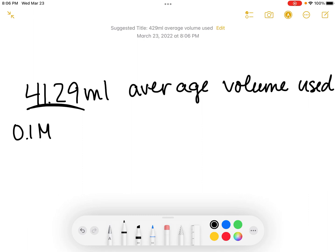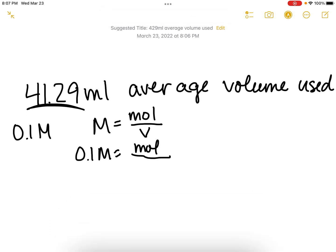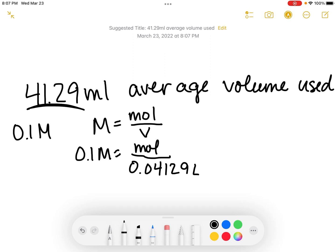We're going to solve for number of moles using our molarity formula: molarity equals moles over volume, and that volume is in liters. My molarity is 0.1 molar, my volume is 0.04129 liters.